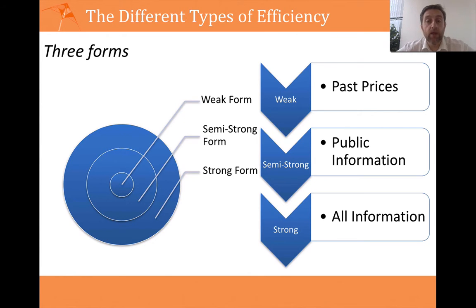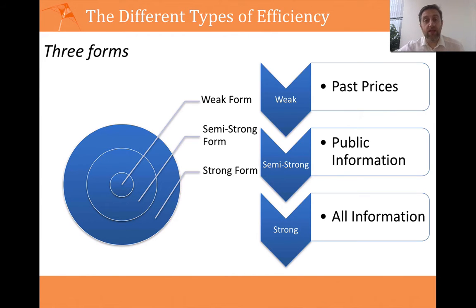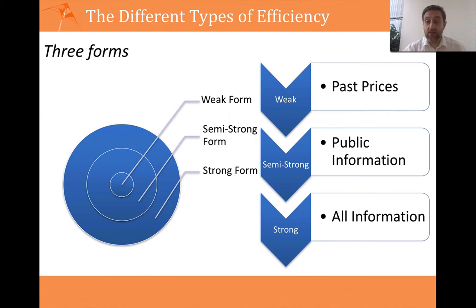The third type of market efficiency, which is the strongest, is known as strong form market efficiency. That form says that prices incorporate all information, whether it's public or private. So it doesn't matter if you know something about a company — you can't make profits on it consistently. People will be able to make profits now and again, but the types of efficiency we talk about here is doing it on average — having a track record of making profits from information. Strong form says that you can't effectively generate excess returns, or continually generate profits from using any type of information.